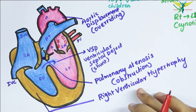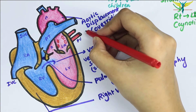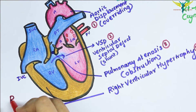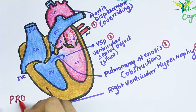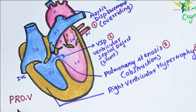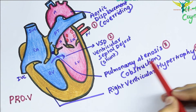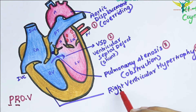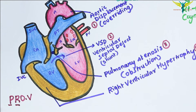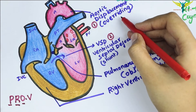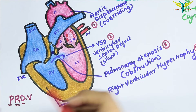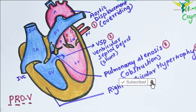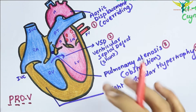You can remember these four features with the mnemonic PROV: P indicates pulmonary stenosis, R indicates right ventricular hypertrophy (RVH), O indicates overriding or aortic displacement, and V indicates VSD or ventricular septal defect.